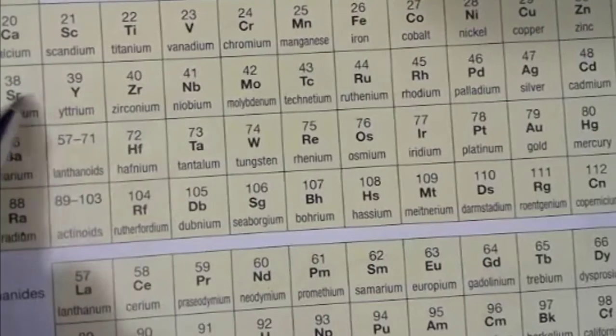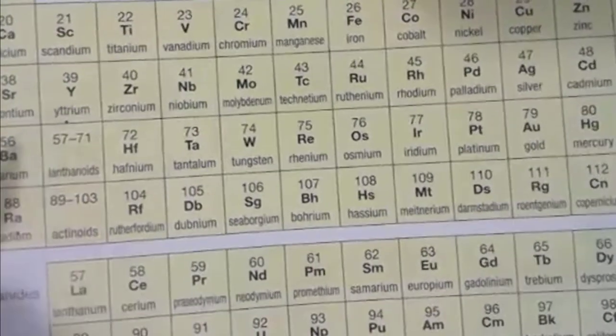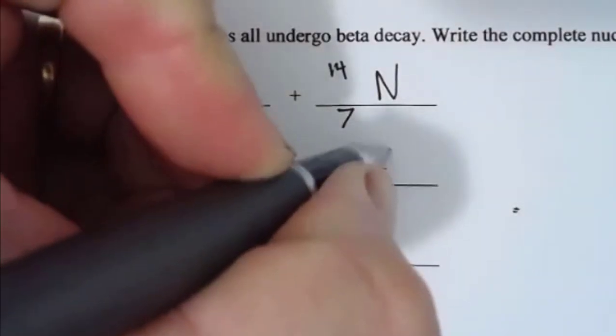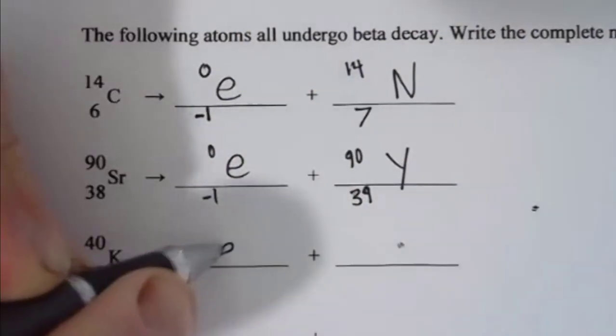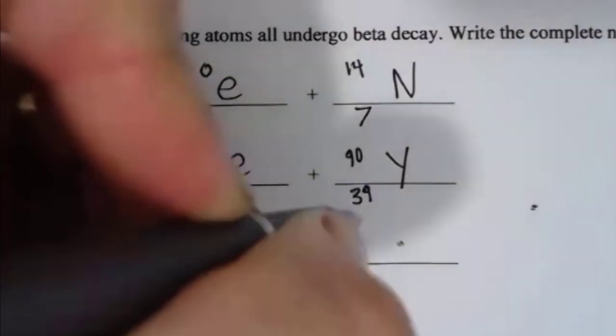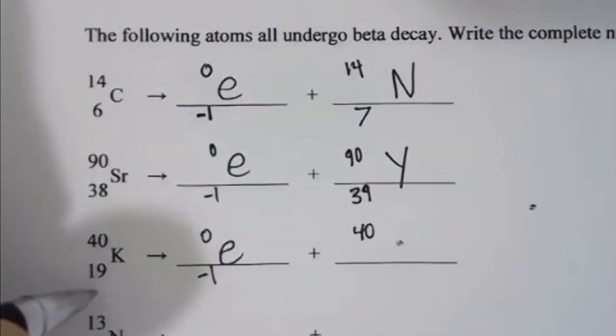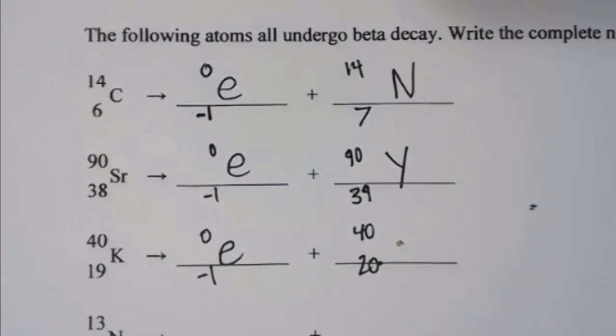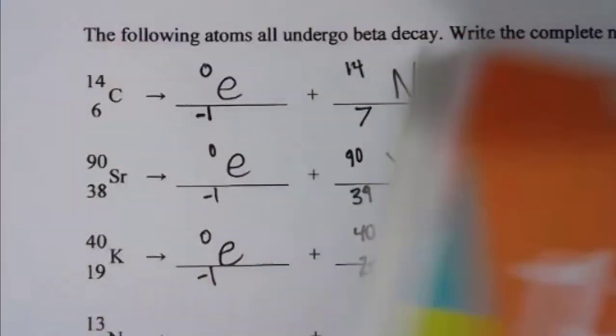The element after strontium is yttrium, symbol Y. With a high-energy electron, the mass stays the same and the atomic number goes up by one. For potassium, it goes to calcium.